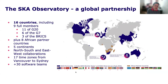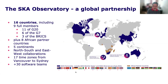The Square Kilometer Array Observatory is a global partnership composed of 16 countries and includes nine full members. We have 11 countries of G20, six of the G7 and three of the BRICs. We also have eight African partners. We cover five continents with collaboration North, South, East and West, and we have 17 time zones from Vancouver to Sydney. Last time I counted, we have more than 30 software teams distributed across all those places.